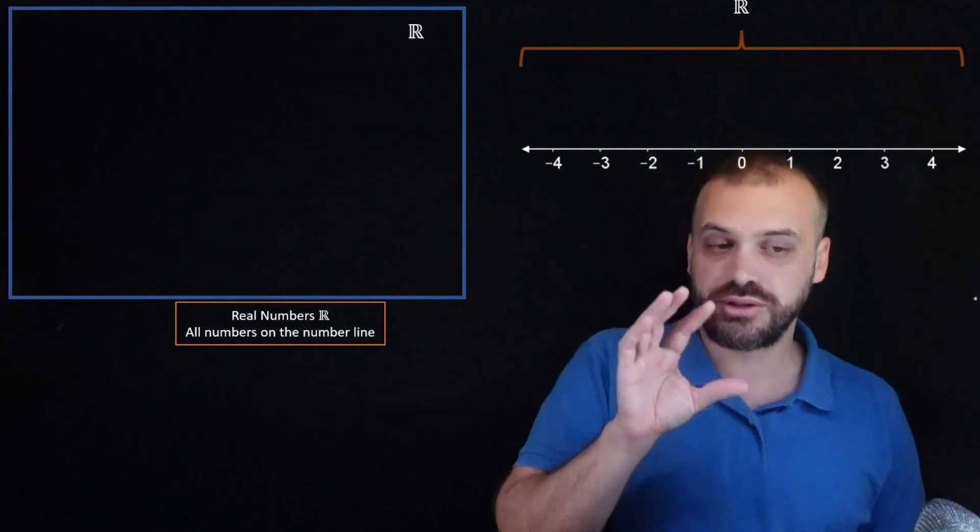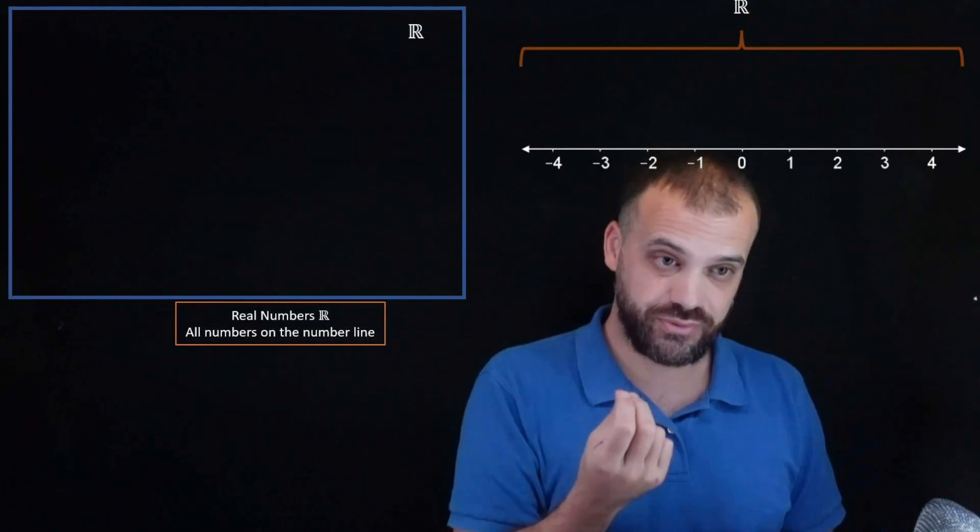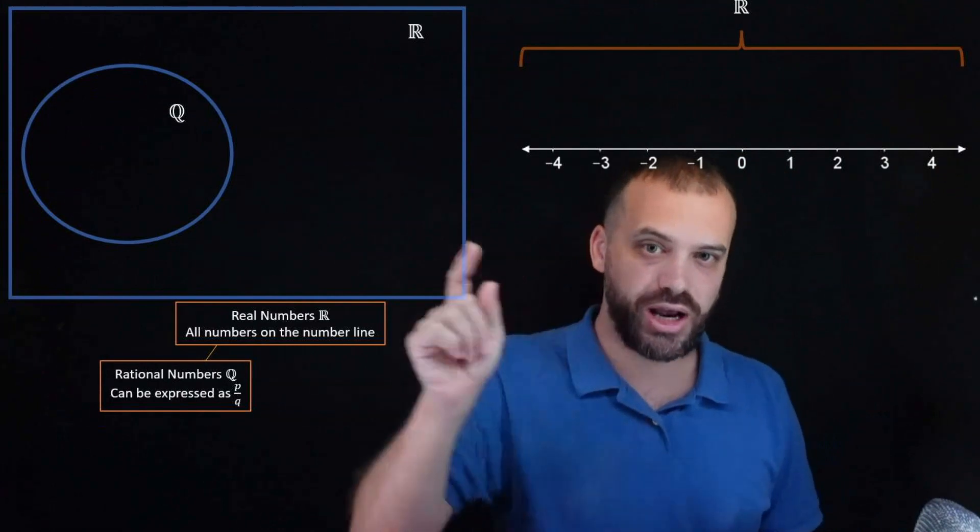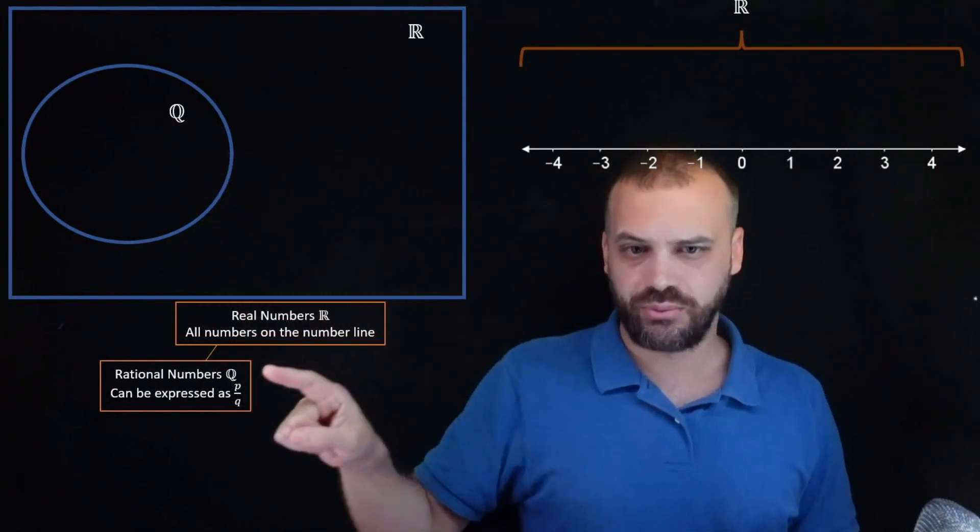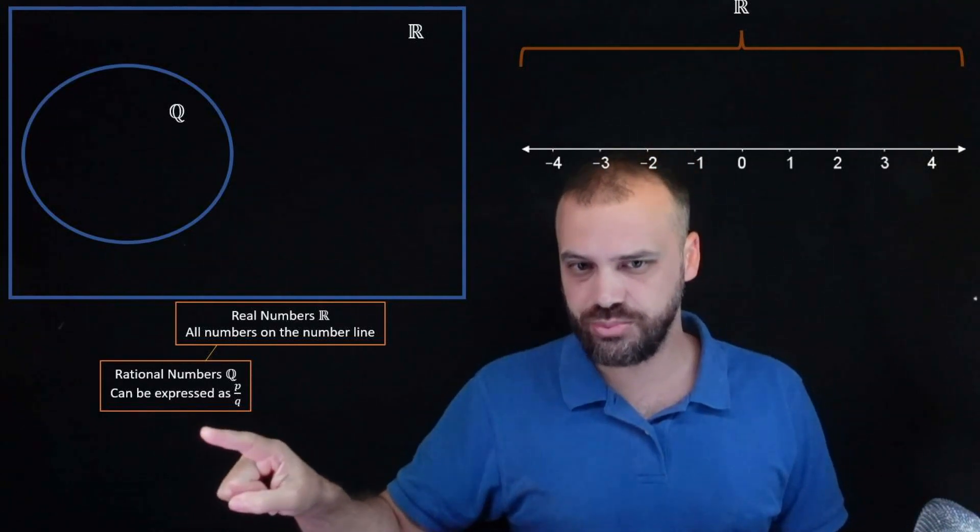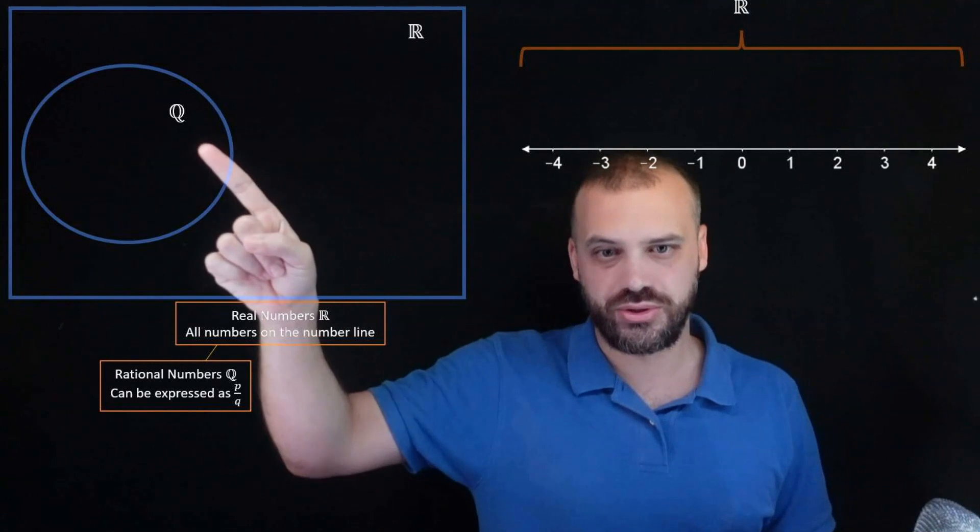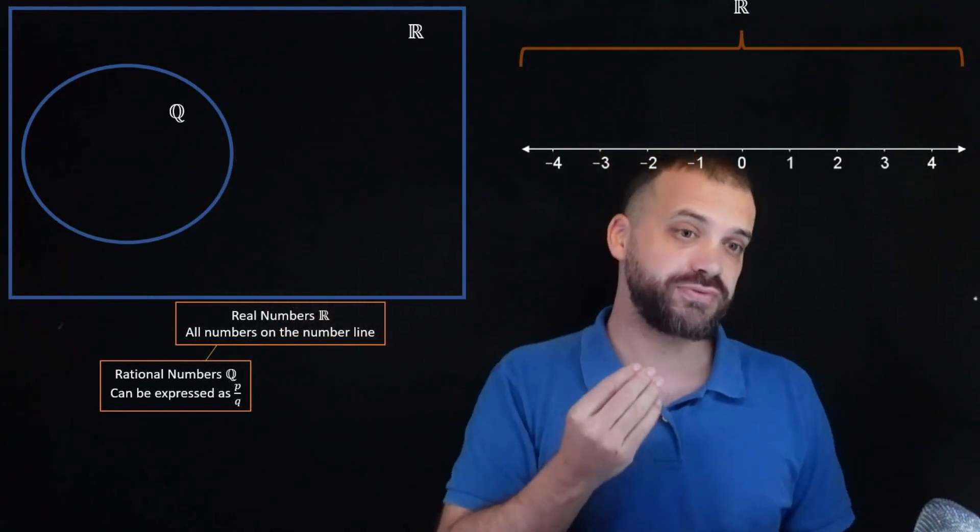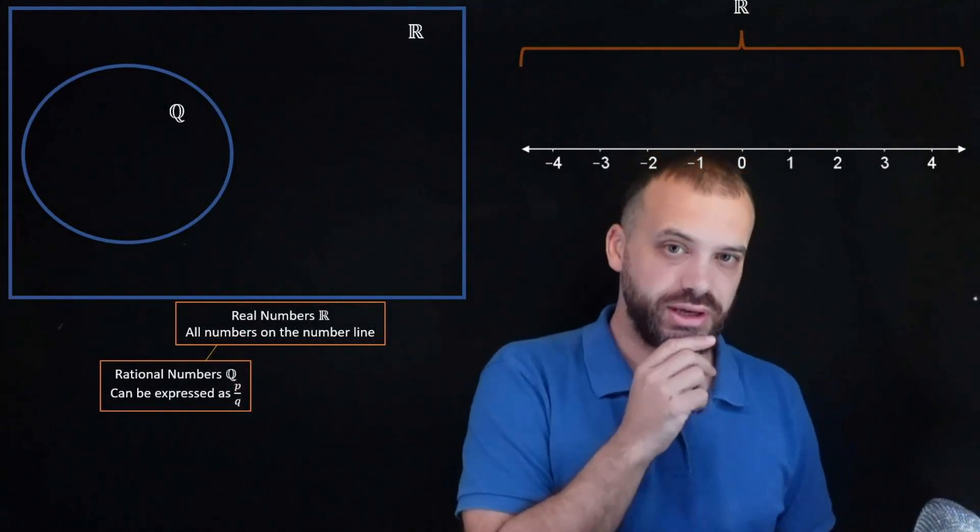Okay, so the real numbers can be broken up into different types of numbers. The first type of number we want to talk about is what's called the rational numbers. Q for rational. What's a rational number? It can be expressed as P over Q. That explains why we use Q here because Q stands for quotient, a number divided by another number.